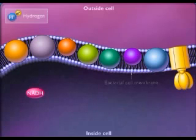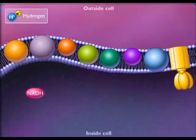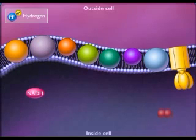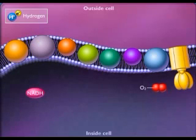A hydrogen consists of a proton and an electron. The electron transport chain consists of a series of special electron carrier proteins that shuttle electrons from NADH to a terminal electron acceptor such as oxygen.